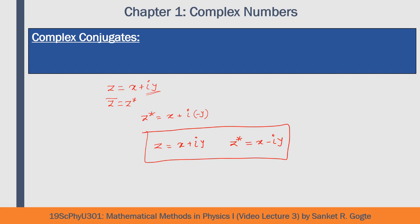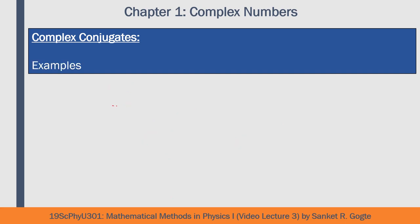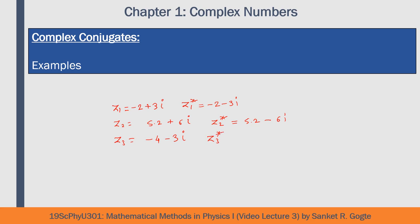Let's consider a few examples. If z_1 equals minus 2 plus 3i, then z_1-star equals minus 2 minus 3i — you simply reverse the sign of the imaginary part. If z_2 equals 5.2 plus 6i, then z_2-star equals 5.2 minus 6i. If z_3 equals minus 4 minus 3i, then z_3-star equals minus 4 plus 3i. All you do is keep the real part as it is and reverse the sign of the imaginary part.